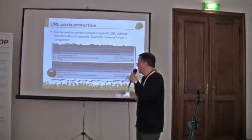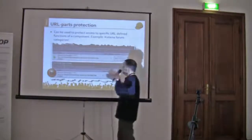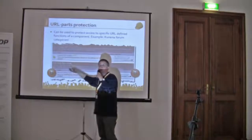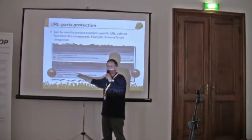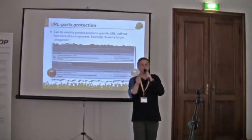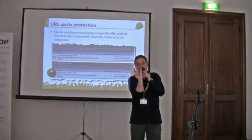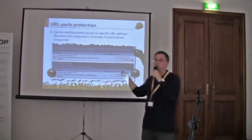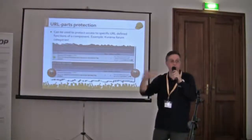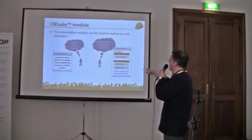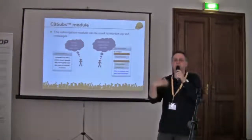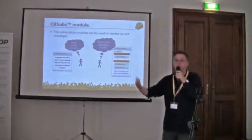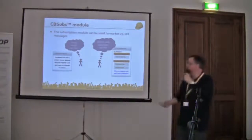The URL parts — we have a specific URL part on Joomlopolis that basically blocks posting and reading in a specific Kunena category. When somebody clicks on that, CB Subs intercepts the URL, sees that the URL part is protected, and will automatically take them to a similar page to become a subscriber in order to access it. We use that on Joomlopolis to support our advanced and professional forums. The CB Subs module is kind of a quick advertising tool — it automatically tells you which subscription you're in and what your possible upgrade options are. It's like a continuous marketing push.